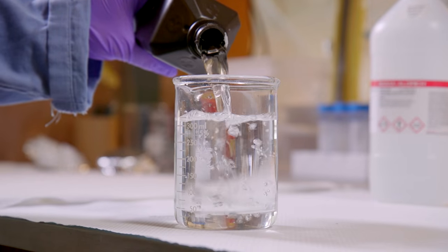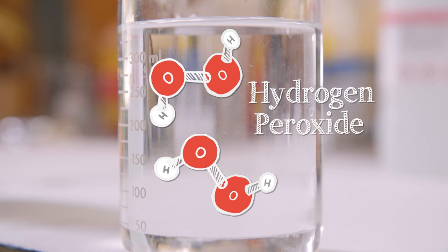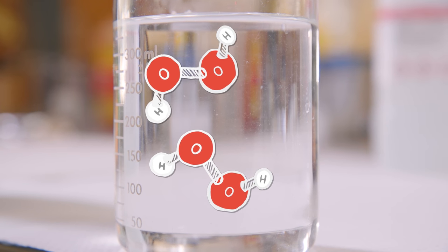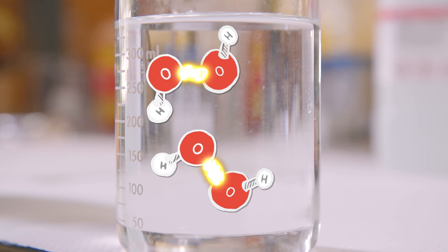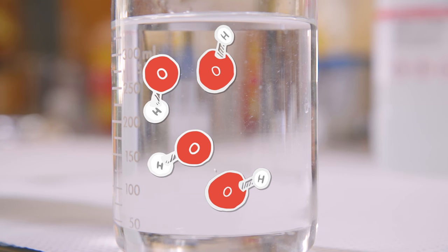So this liquid is actually made up of molecules that are constantly wanting to break apart. Hydrogen peroxide or H2O2 is held together by an unstable bond, this one between the oxygen atoms. So the molecule wants to break down into smaller, more stable pieces.